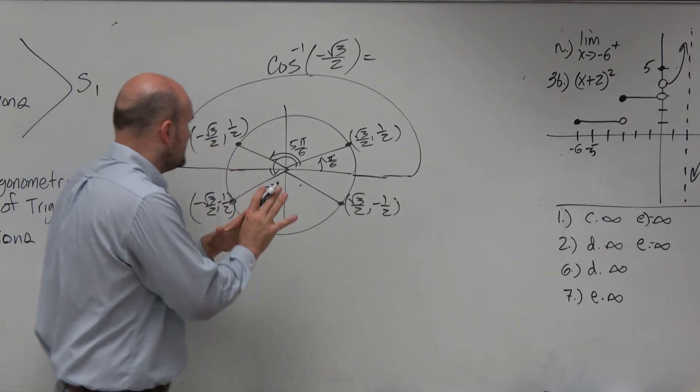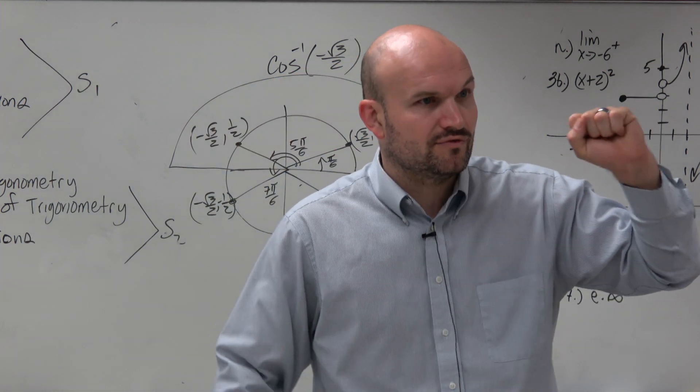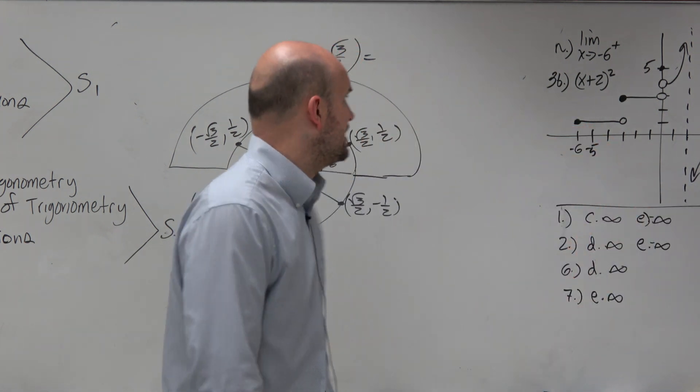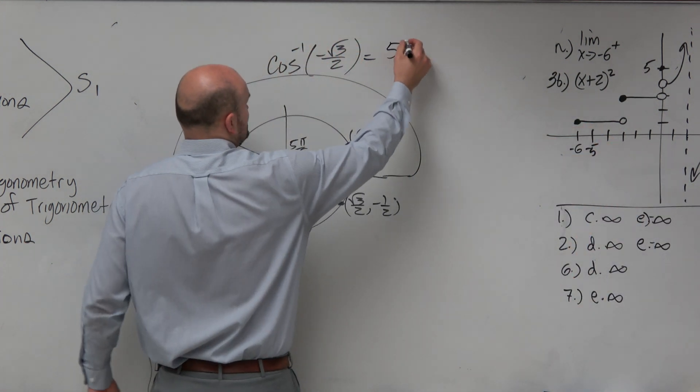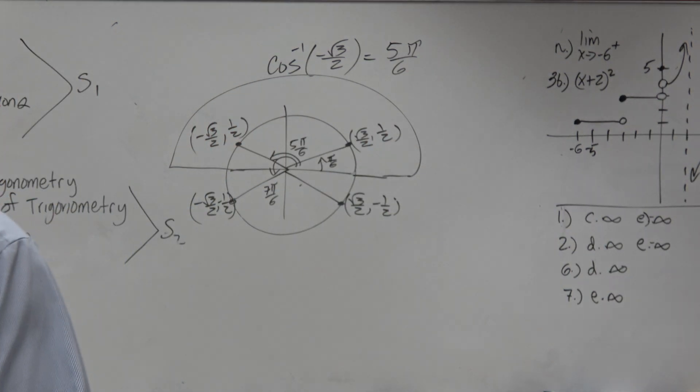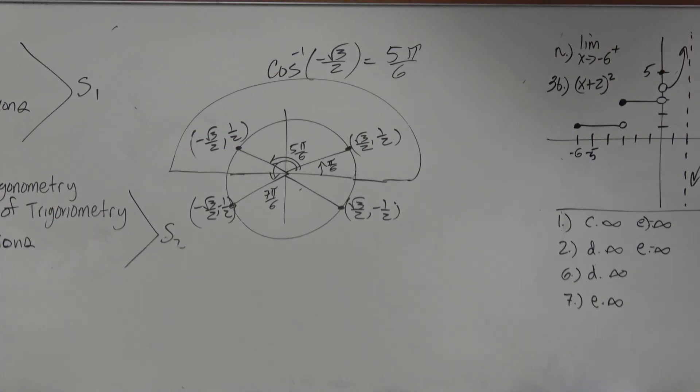So what is the only angle where the x coordinate is equal to negative square root of 3 over 2? So that angle is just 5 pi over 6. That is the only answer.